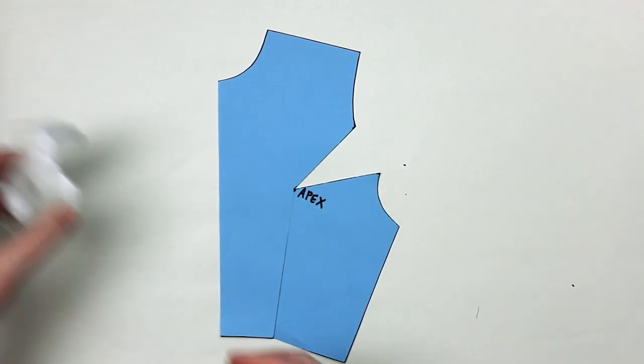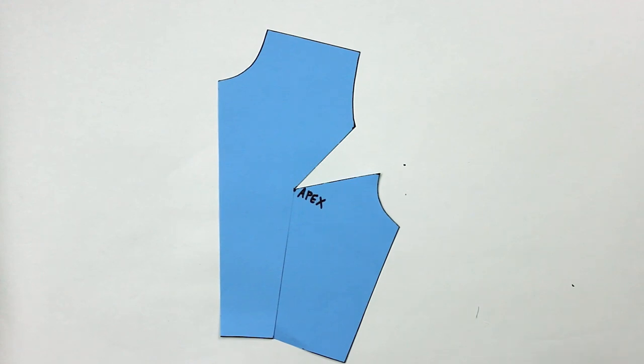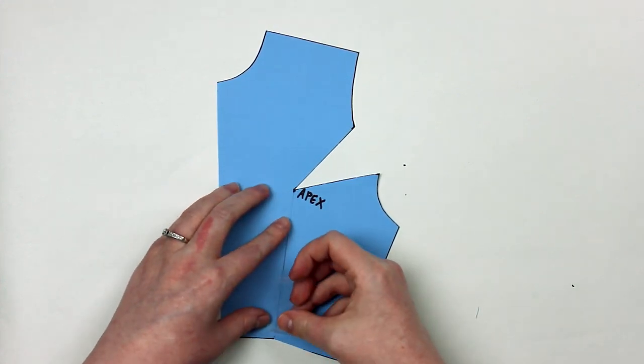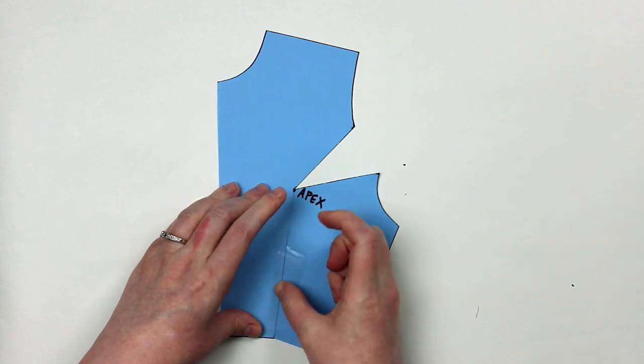I like to tape that part closed. Typically you can use scrap paper if you want to fill in the seam allowance and the dart intake now, but I'm going to go ahead and copy it onto a fresh sheet.